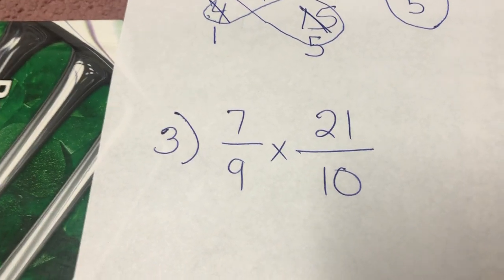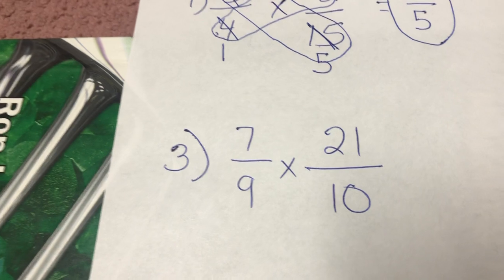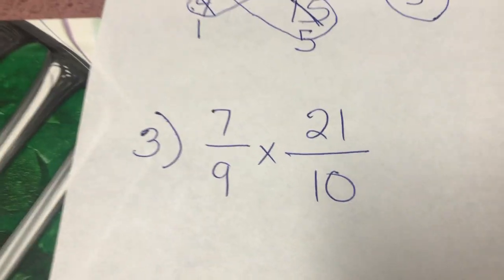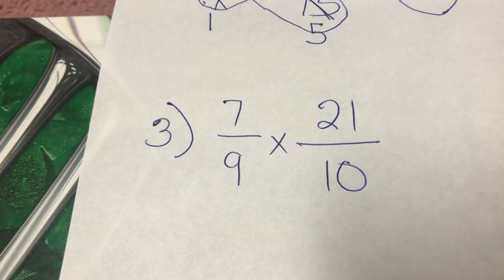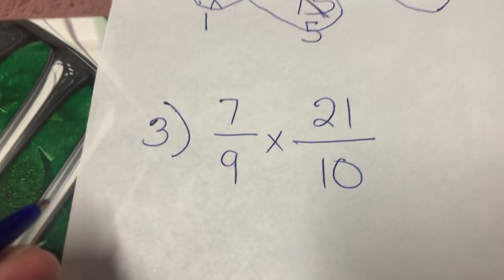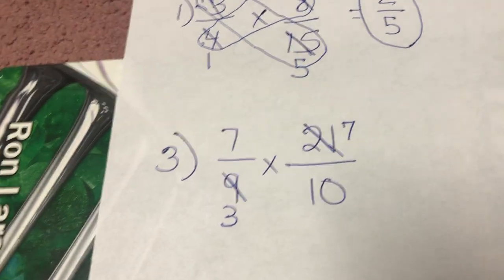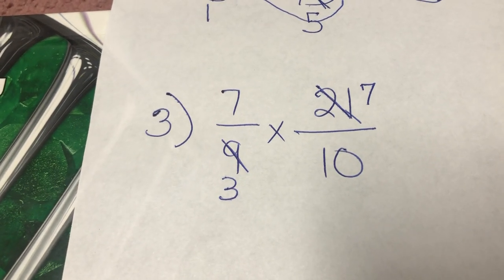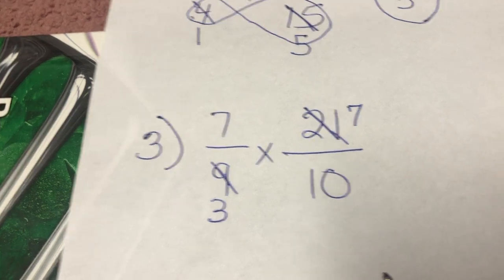Moving along — seven over nine times twenty-one over ten. Sometimes there will be an improper fraction incorporated into the problem — don't change it now, we'll handle it at the end. Step one: it's already a fraction so we leave it. Step two: cross-check. I look at nine and twenty-one — both are divisible by three. Nine divided by three is three, and twenty-one divided by three is seven. Then I look at seven and ten — there's no number besides one that can go into both, so I leave those alone.